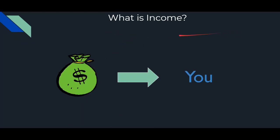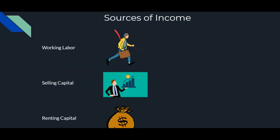What is income? Income is when an amount of money comes to you. The three main sources of income are working labor, which is your everyday job, selling capital, which is investing, and renting capital, which is owning your property.